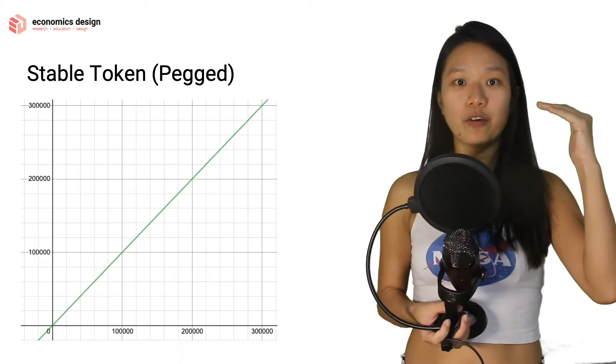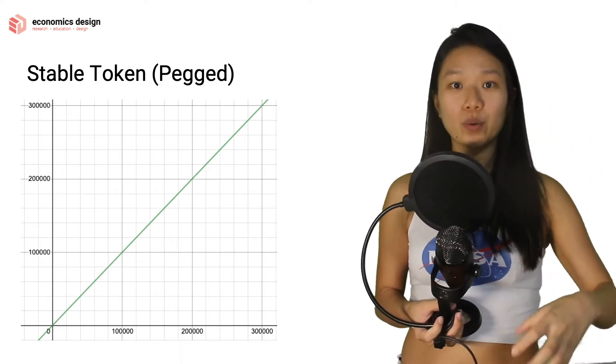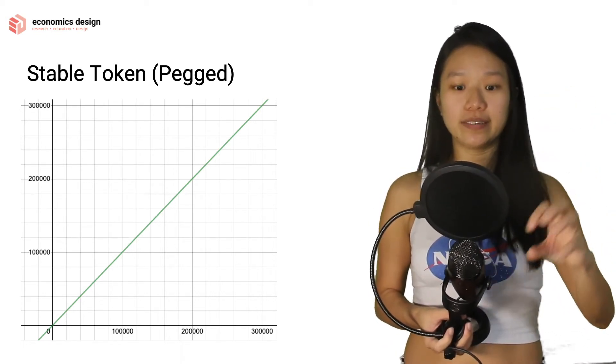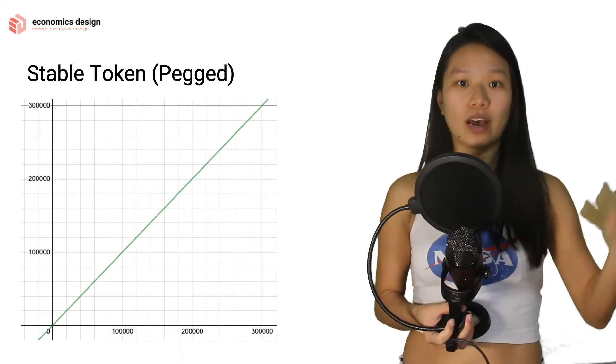That means for every BTC that you add into this curve, this curve will automatically mint a synthetic BTC or a wrapped BTC for you. And that BTC will go into the collateral that goes into the area under the curve. So that's how it works.